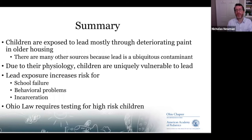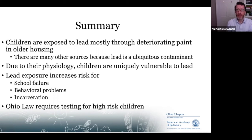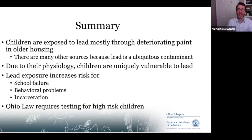In summary: children are mostly exposed to lead through deteriorating house paint, but there are many other sources since lead is a ubiquitous contaminant that we've been using for thousands of years, and leaded gasoline contaminated soil widely. Children are uniquely vulnerable to lead — their brains are developing and they absorb more toxicants than adults. Lead exposure increases the risk for school failure, behavior problems, and risk for incarceration. These are not trivial problems, and there is actually something we can do about it. Ohio law requires testing for high-risk children, and that's part of how we can help these kids and change their outcomes.